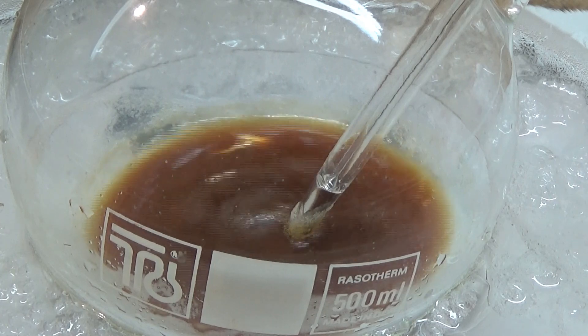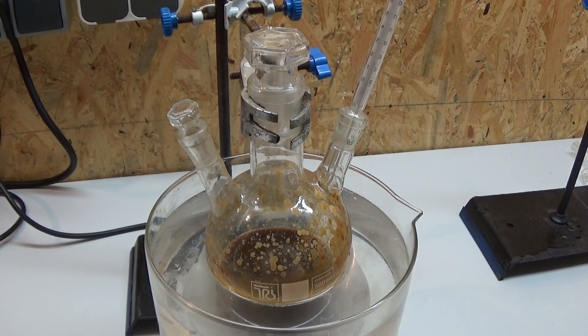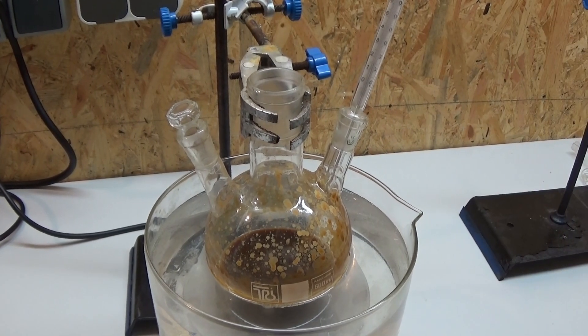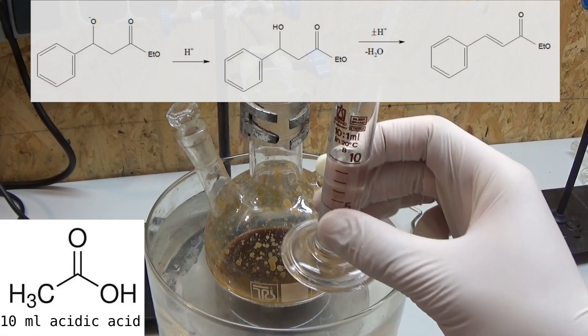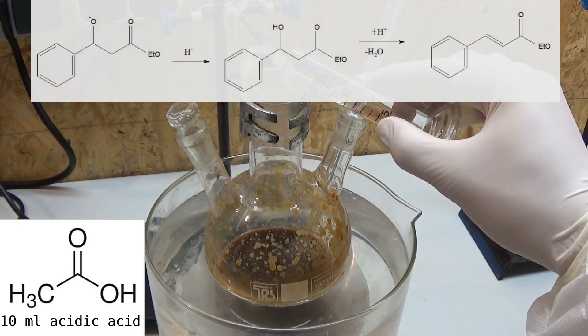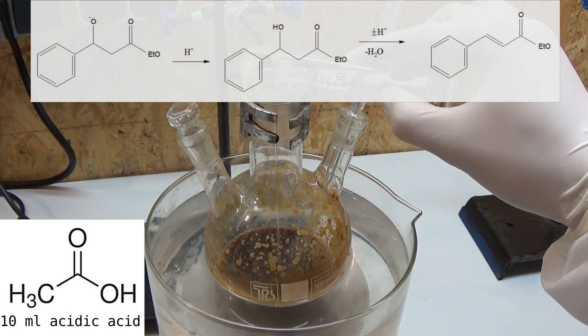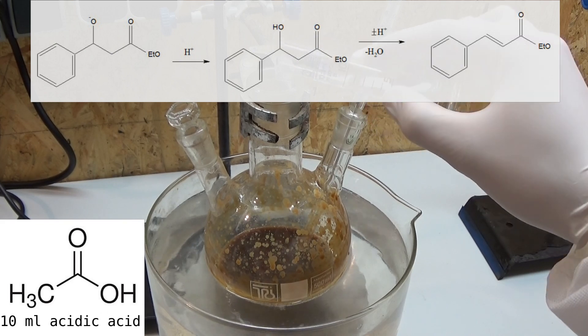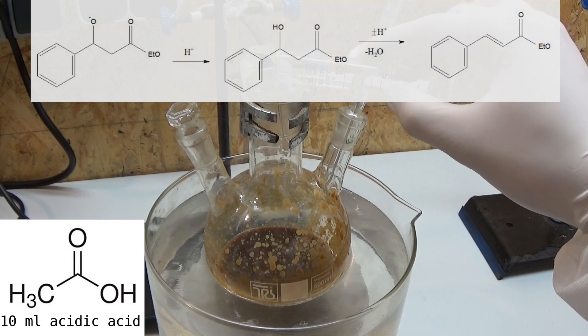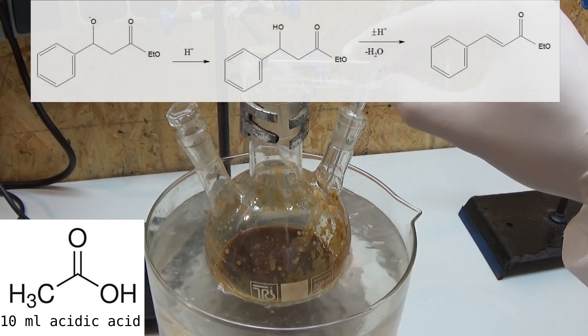When the addition is done it is stirred until all of the sodium is consumed. This is very important because we add water which could lead to an explosion. Now we add 10 milliliters of glacial acetic acid and stir the whole thing up. This protonates the secondary alkoxide yielding a hydroxy group. The hydroxy group then undergoes an acid-catalyzed thermal elimination of water and yields the ethyl ester of cinnamic acid.